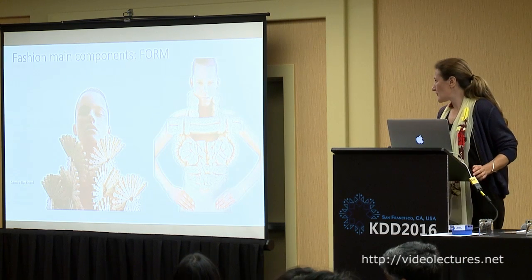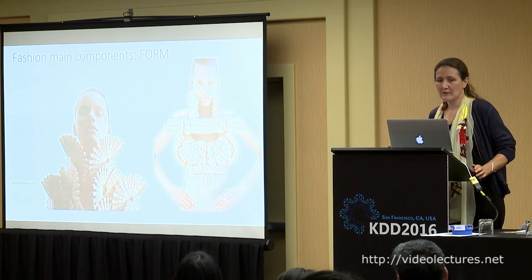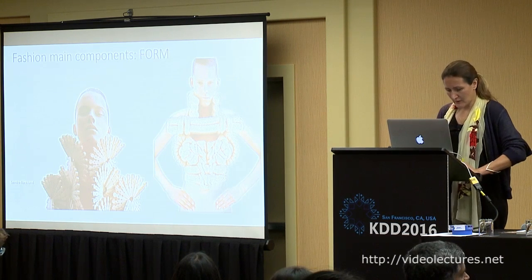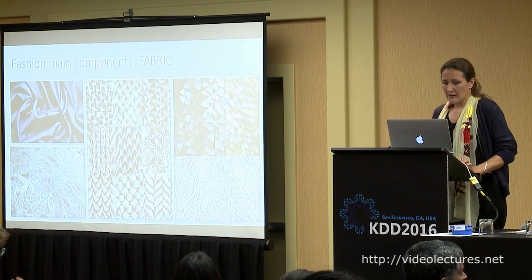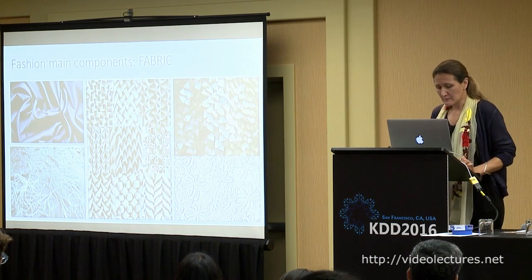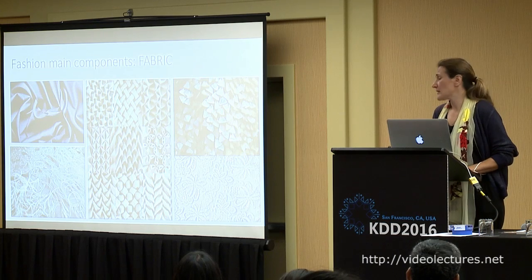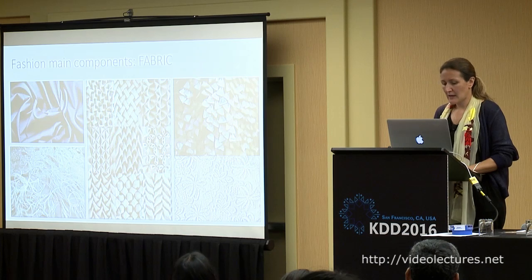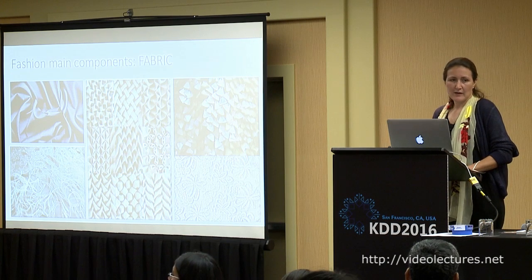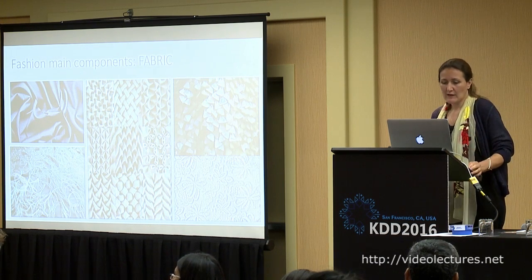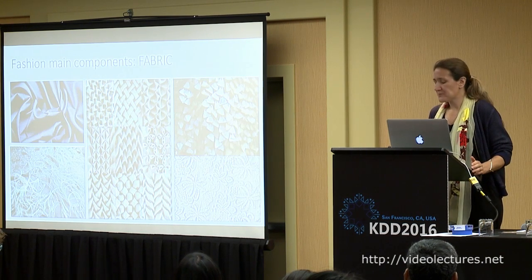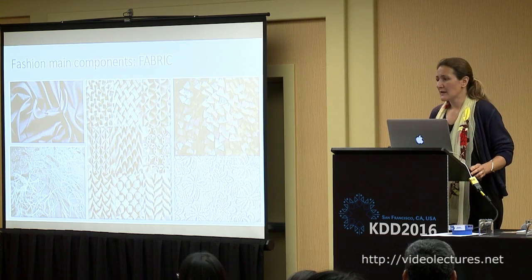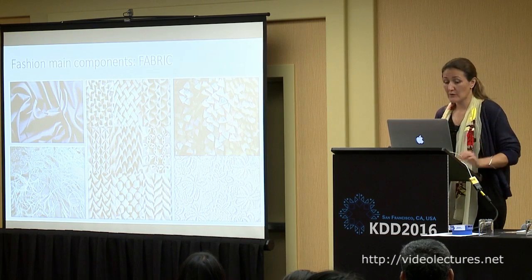Another main component is form. Forms are very varied, and it's really difficult to find a common taxonomy or classification for describing them, mostly because of the large variety. Another main component is fabric, and that's where I feel big fashion data can be helpful for designers — particularly online services that help them source fabrics according to their requests.